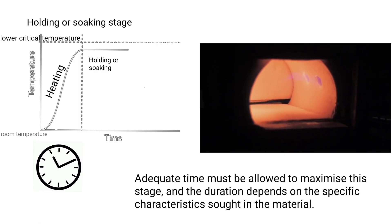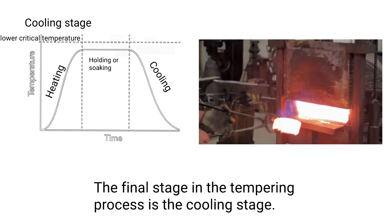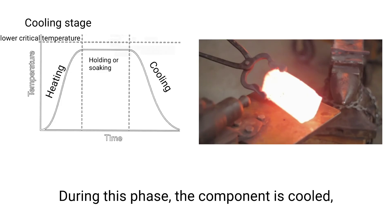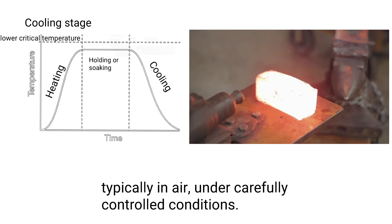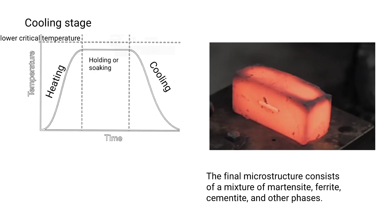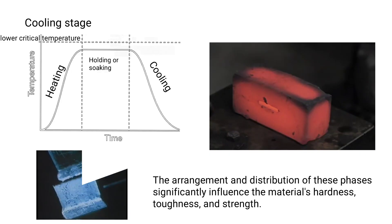The final stage in the tempering process is the cooling stage. During this phase, the component is cooled, typically in air, under carefully controlled conditions. The rate of cooling is crucial and is predetermined based on various factors. The final microstructure consists of a mixture of martensite, ferrite, cementite, and other phases. The arrangement and distribution of these phases significantly influence the material's hardness, toughness, and strength.